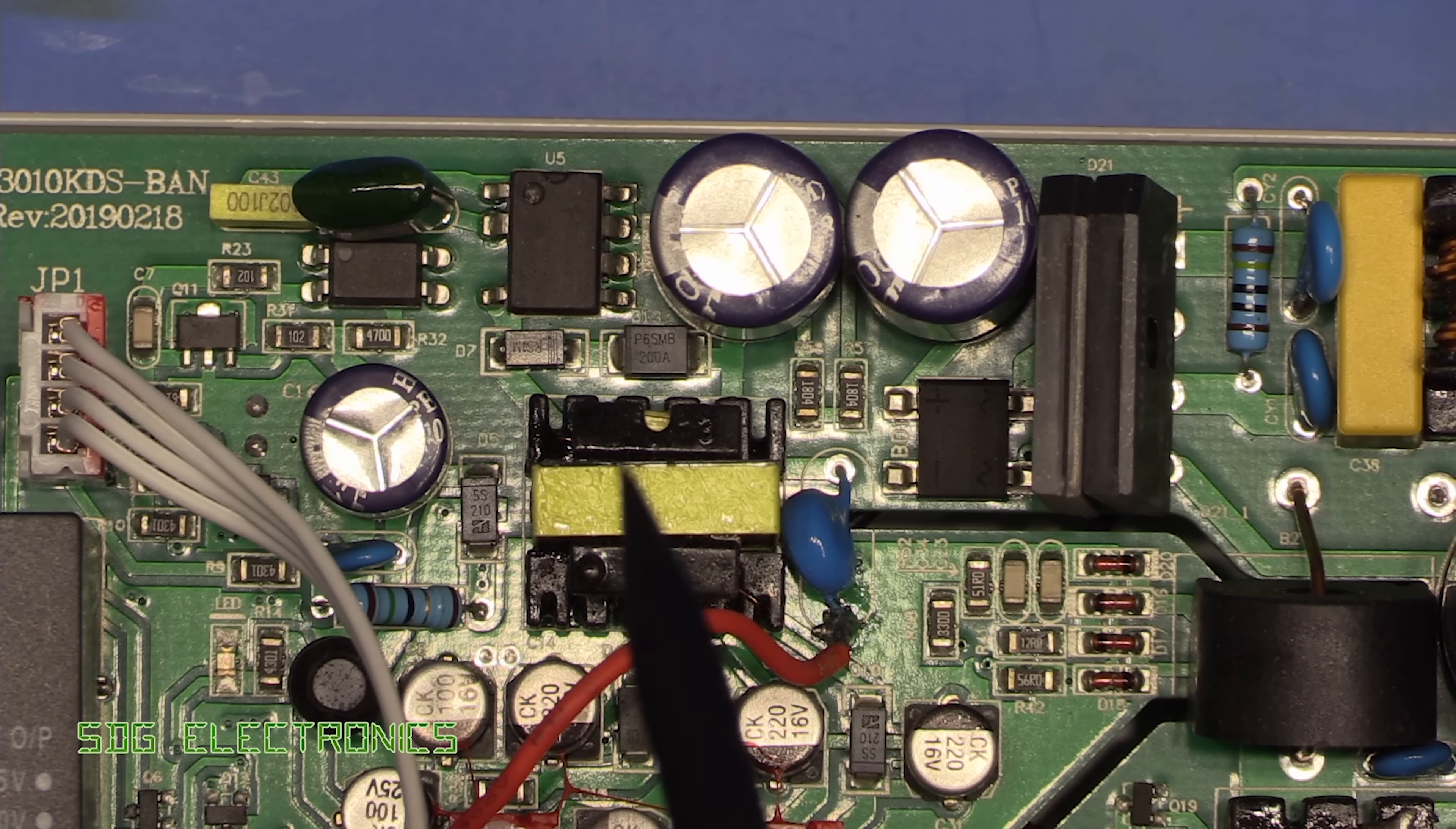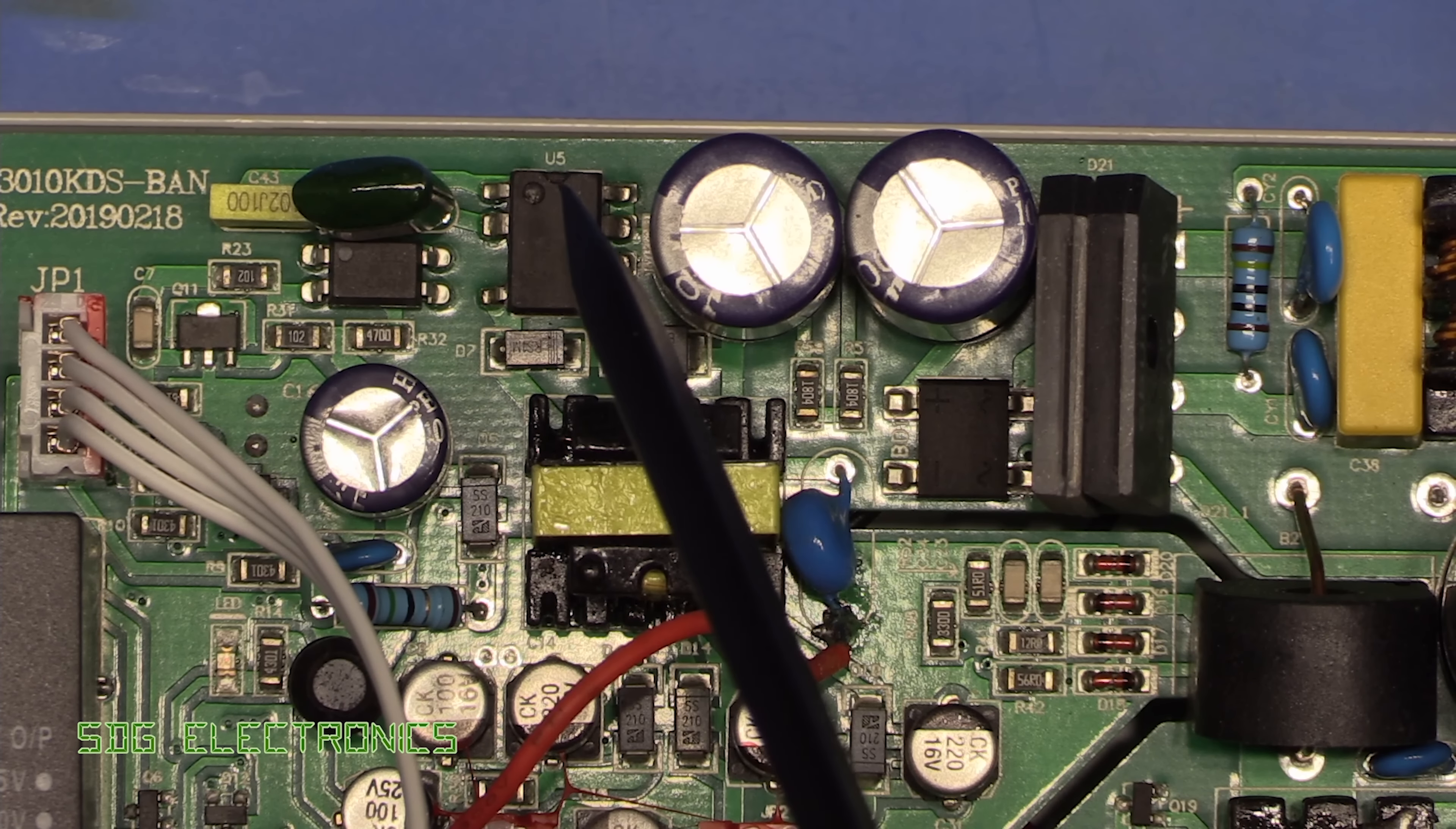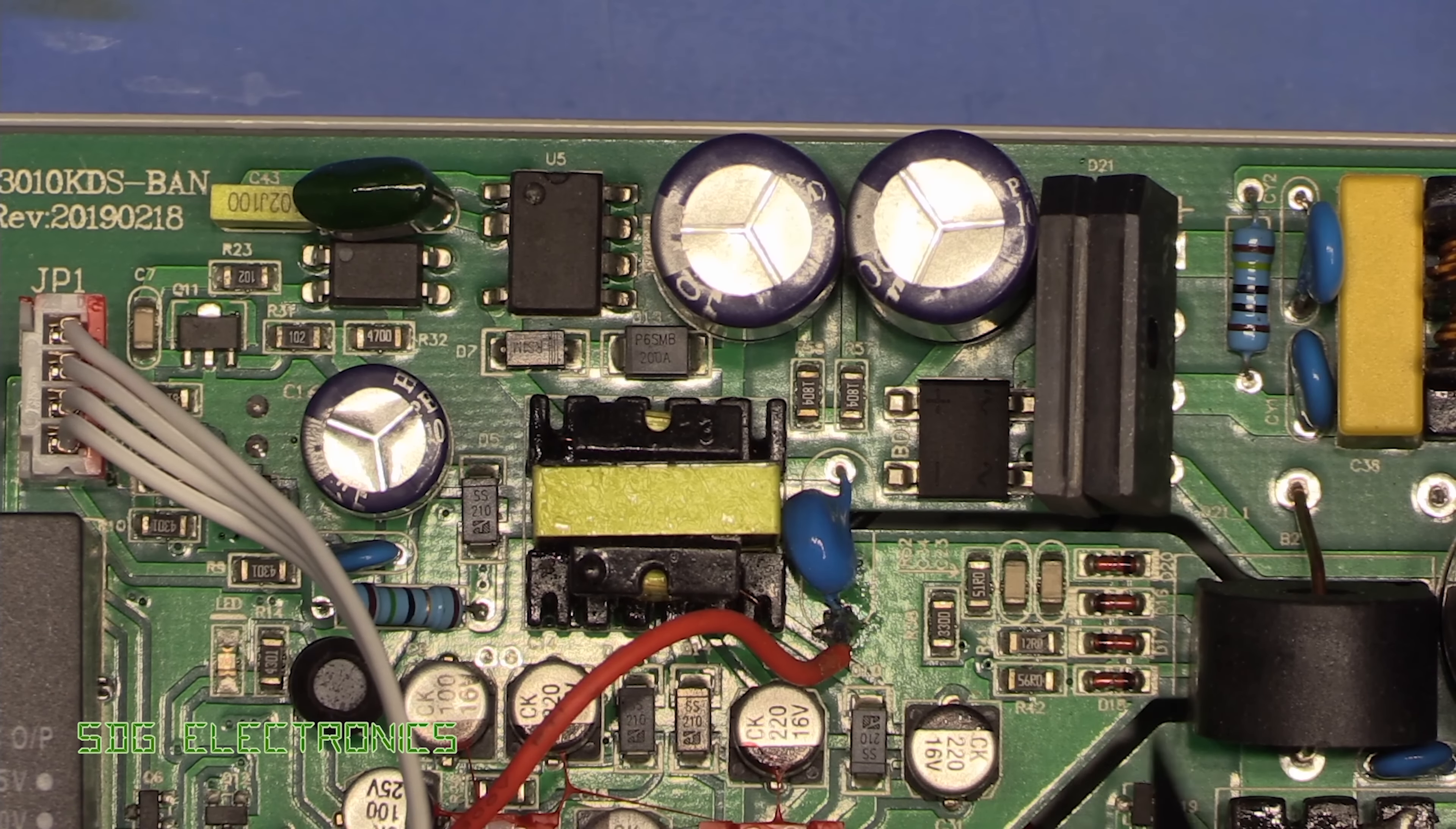We've also got another switch mode controller. So a separate bridge rectifier for this and a couple more capacitors going into a Power Integrations TNY switch mode power supply controller IC. Now Power Integrations are a big player in the switch mode controller IC. And in a few months, we're going to be doing some episodes on switch mode converter design. We're going to do an AC to DC converter, we're going to wind our own coil and everything. So stay tuned for that. But we're going to start off by using one of these Power Integrations ICs. And this is just providing the control voltage for all of the electronics in the system.